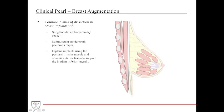Breast augmentation is currently the most common cosmetic procedure. A sub-glandular implant is placed in the retromammary space — between the fatty tissue and the pectoralis major. A submuscular implant is placed underneath the pectoralis major. A biplane implant uses both the pectoralis major muscle and the serratus anterior fascia to create an inferior lateral sling. Notably, sub-glandular implants are difficult to assess for cancers on mammography due to their close proximity to breast tissue, which can obscure findings.